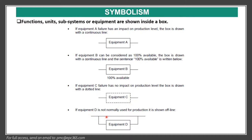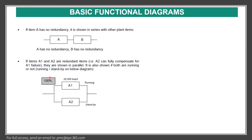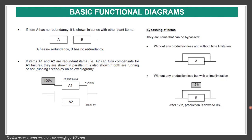If equipment D is not normally used, the production line is shut and offline. Item A with no redundancy is shown in series with other parts of the plant. When there is redundancy, items A1 and A2 are shown in parallel — one is running, one in standby — because A2 can fully compensate for an A1 failure. Bypassing of items without any production loss and without time limitation is also represented.